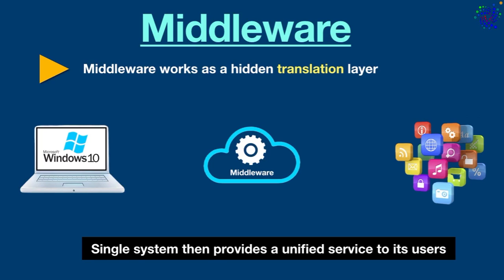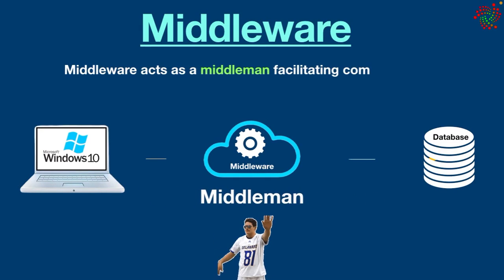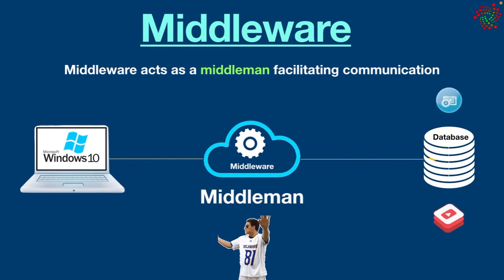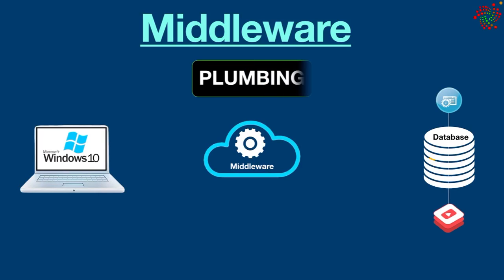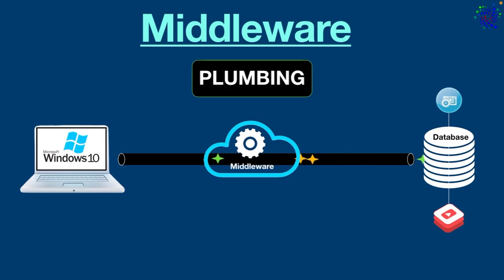Technically, middleware acts as a middleman, facilitating communication and bridging the gaps between tools, databases, and applications. It is commonly characterized as the glue that connects different software platforms and devices together. Middleware is also known as plumbing because it connects two applications so that they can pass data back and forth like through a pipeline. Organizations that use multi-cloud environments often use middleware as a more cost-effective way to develop applications.